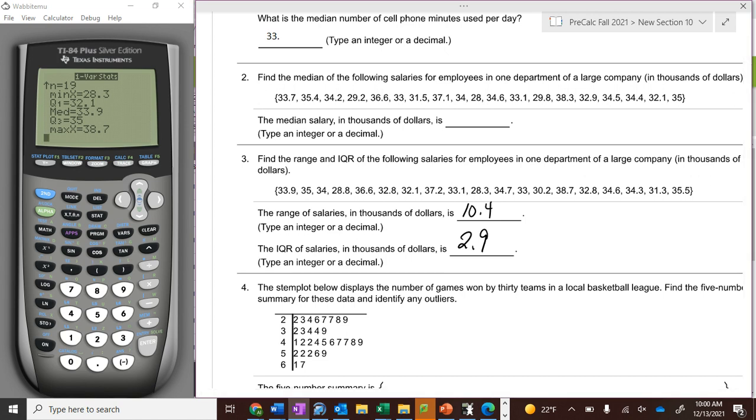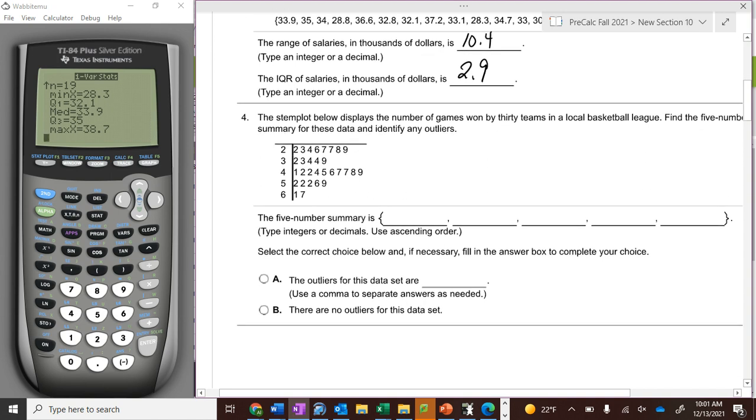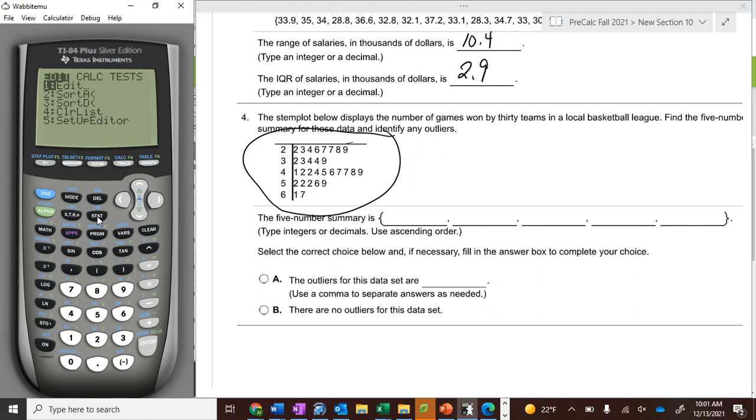Five-number summary. This is called a stem and leaf plot. There's a whole bunch of numbers there. How many numbers? Well, there's 8 numbers in the top row, plus another 5 is 13, plus 10 is 23, plus another 5 is 28, plus 2—there's 30 numbers there.